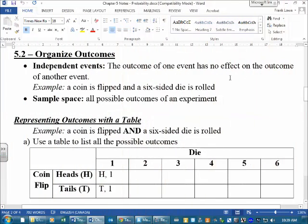Okay, 5.2. This is organizing the outcomes. Now, so far we have just flipped a coin or spun a spinner or rolled a die. Just one thing.